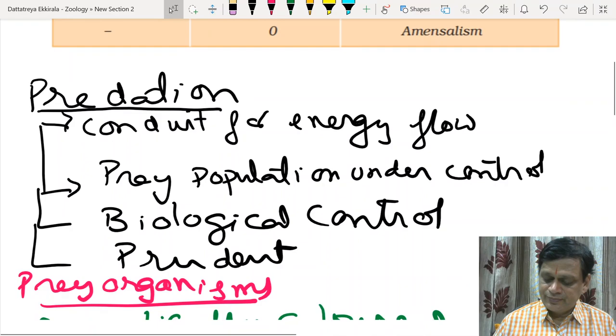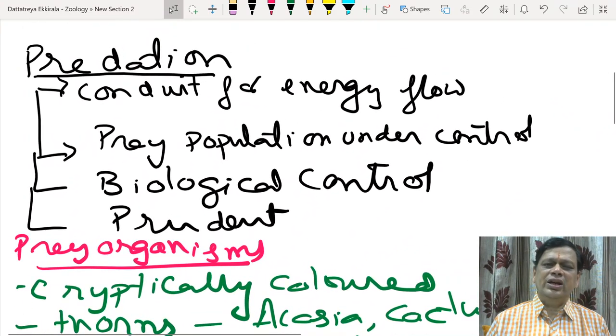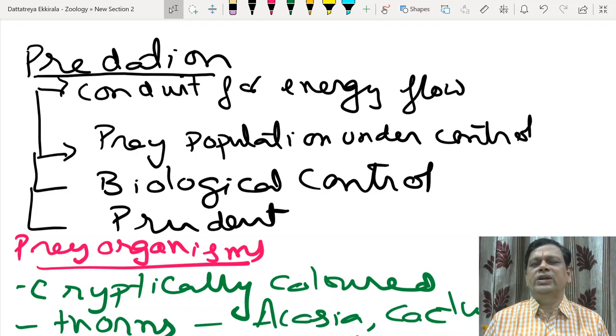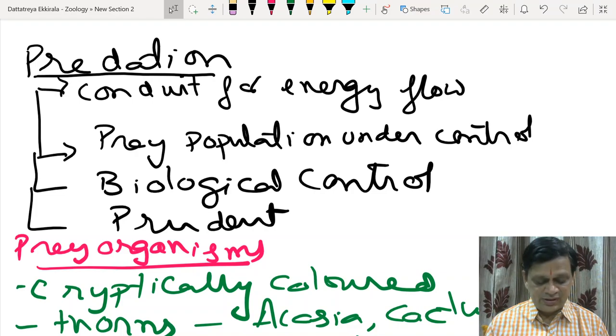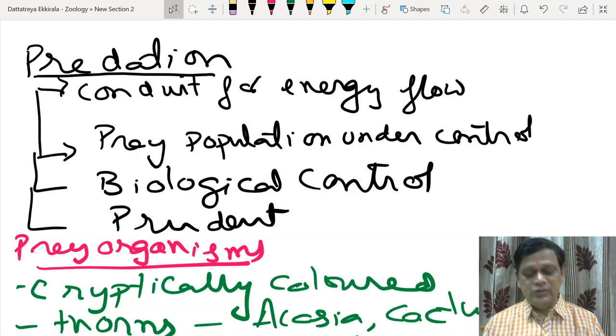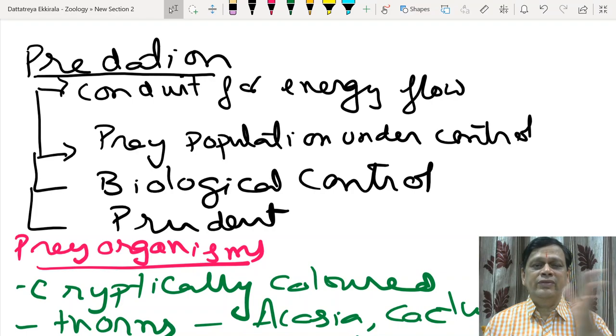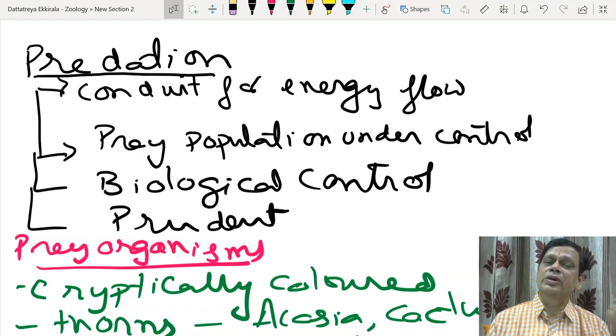In predation, from one narrow thinking point, we think predation is dangerous or harmful, not like that. There is a control. To control one organism, nature has allowed the development of other organisms. That is the beauty of nature. What is the importance of predation to the ecosystem? It is a conduit, a route for energy flow. There will be different channels for energy flow, one after other. From plants, herbivores consume and herbivores are eaten by carnivores.